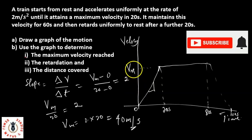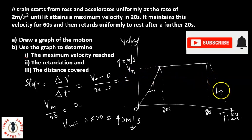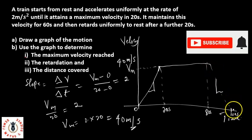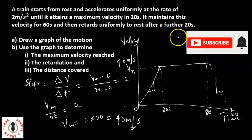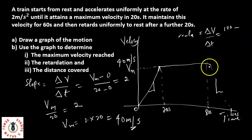The maximum velocity at this point is 40 meters per second. Now we need to find the retardation — that's a negative acceleration — occurring between 80 and 100 seconds. The final velocity is 0 at time 100 seconds, and the initial velocity is 40 meters per second at time 80 seconds. The retardation equals delta V over delta T, which is 0 minus 40 over 100 minus 80.